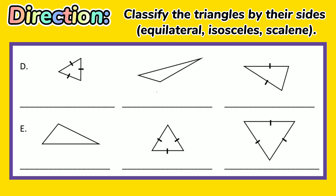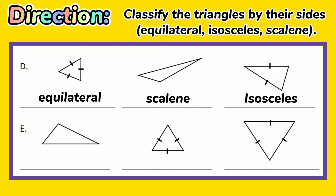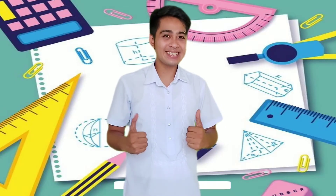Set D: the first is equilateral triangle, the second is scalene triangle, and the third is isosceles triangle. Set E: the first one is scalene triangle, and the second and third triangles are equilateral triangles. Good job, kids!